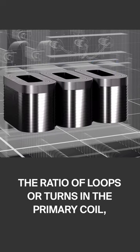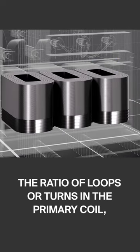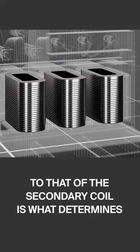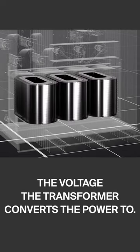The ratio of loops or turns in the primary coil to that of the secondary coil is what determines the voltage the transformer converts the power to.